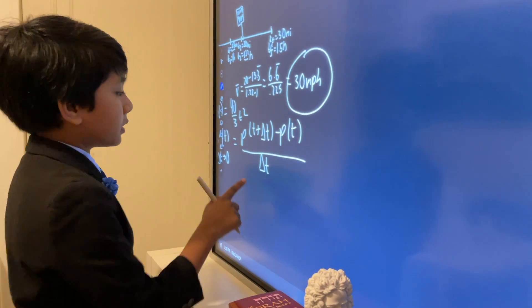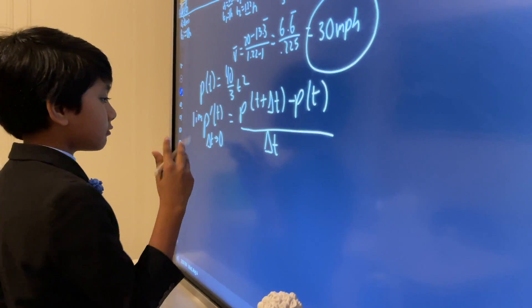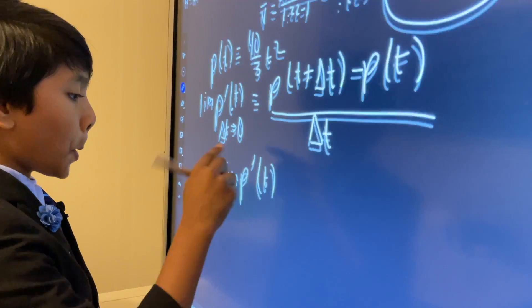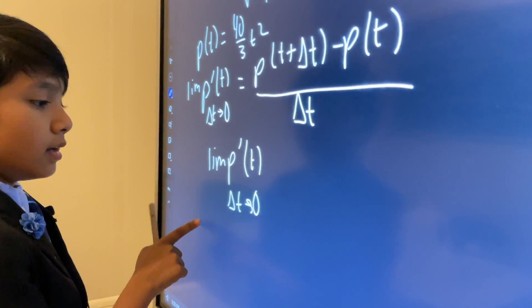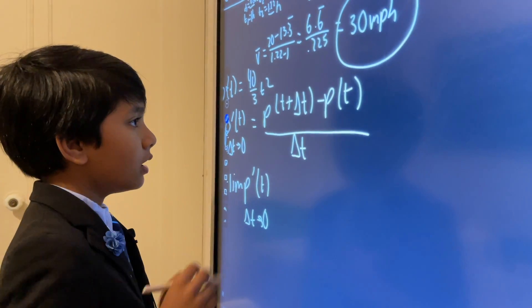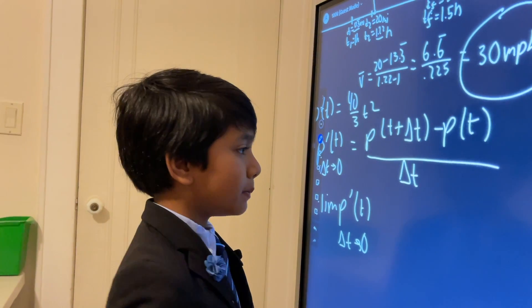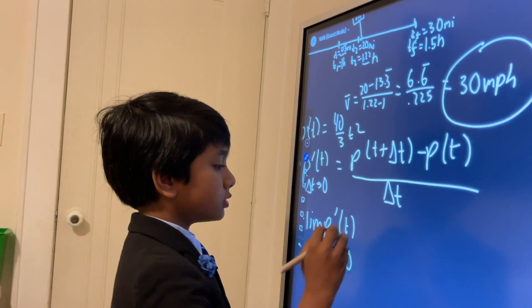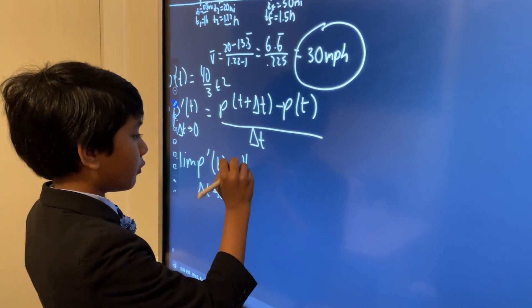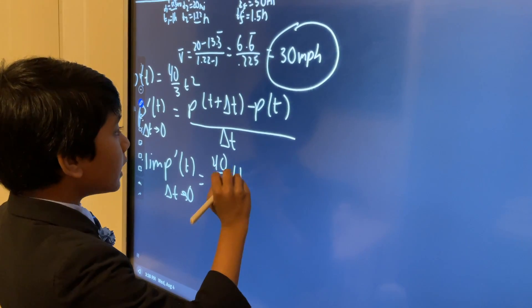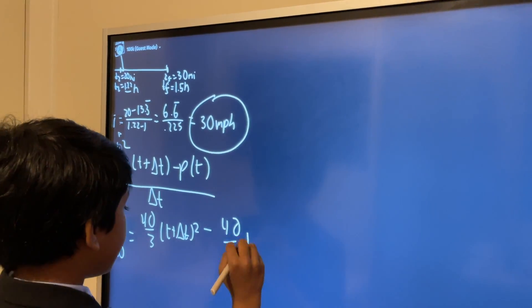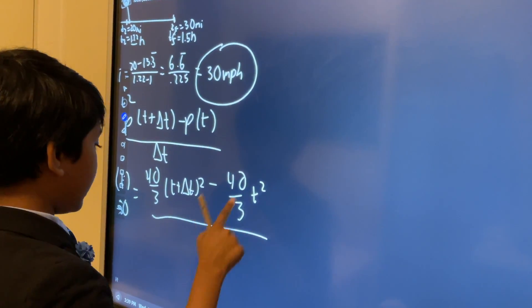Now, well, you should probably watch the graph explanation if you're confused with all of this. But, hey, we don't have time for that here at Barry Science Lab. So, delta t is approaching 0. So, p of t plus delta t minus p of t over delta t. So, let's plug that in and we get 40 over 3 times t plus delta t whole squared minus 40 over 3 t squared divided by delta t.